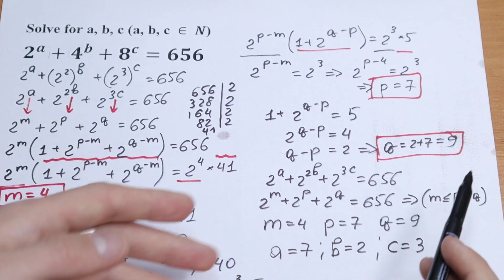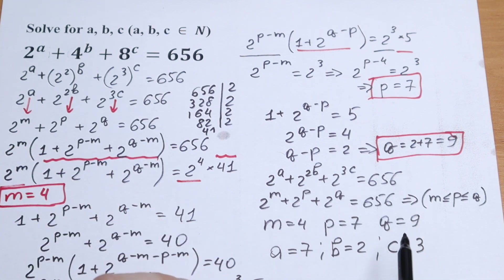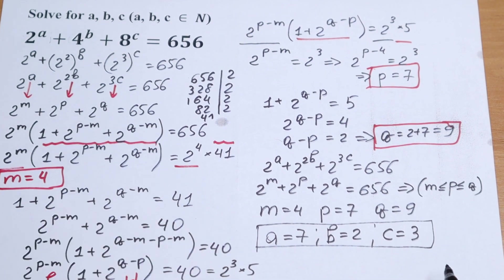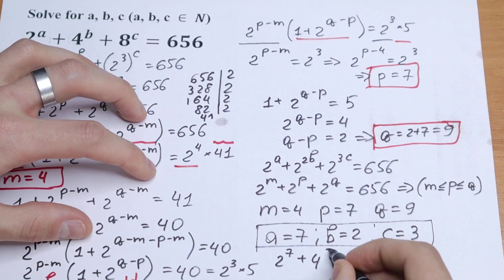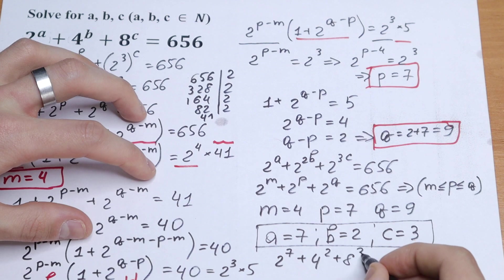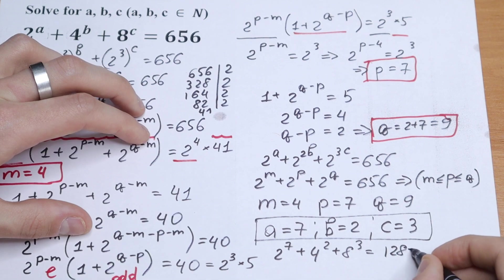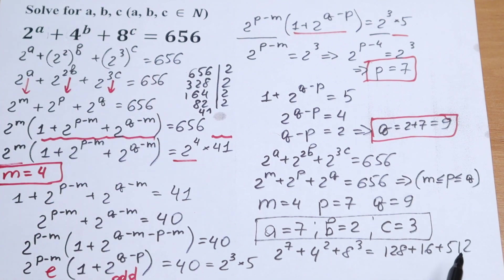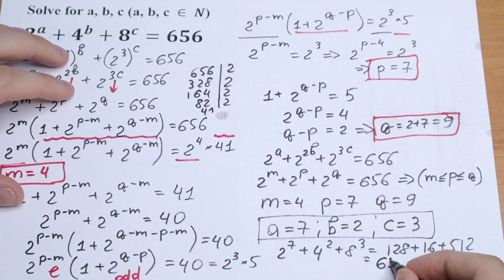We have found our answer. There is no integer answer other than this; there are many non-integer solutions, but in integers this is our solution. Let's verify: 2 to the seventh power plus 4 squared plus 8 cubed equals 128 plus 16 plus 512, equals 656. Correct!